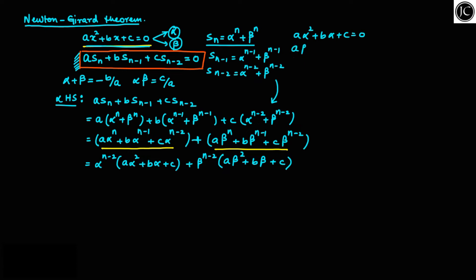Now, as alpha and beta are the two roots of this equation, we can say a·alpha² + b·alpha + c = 0, and at the same time a·beta² + b·beta + c = 0. Therefore, this part comes to 0 and this part comes to 0, so our answer is 0, which is nothing but the right-hand side. So we have proved Newton's Girard theorem, which states that if alpha and beta are the two roots of ax² + bx + c = 0, then a·S_n + b·S_(n-1) + c·S_(n-2) = 0, where S_n = alpha^n + beta^n.